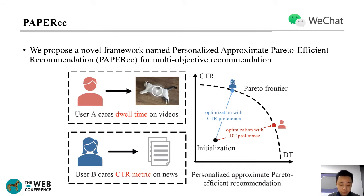In this work, we propose a novel framework named Personalized Approximate Pareto-Efficient Recommendation, shortened as PAPER, for multi-objective recommendation. In the left figure, user A usually watches videos and thus cares more about the dual-time metric. On the contrary, user B usually reads news and thus cares more about the CTR metric. Therefore, in PAPER, we want to optimize for user A and user B simultaneously but towards different directions according to their objective-level preferences.